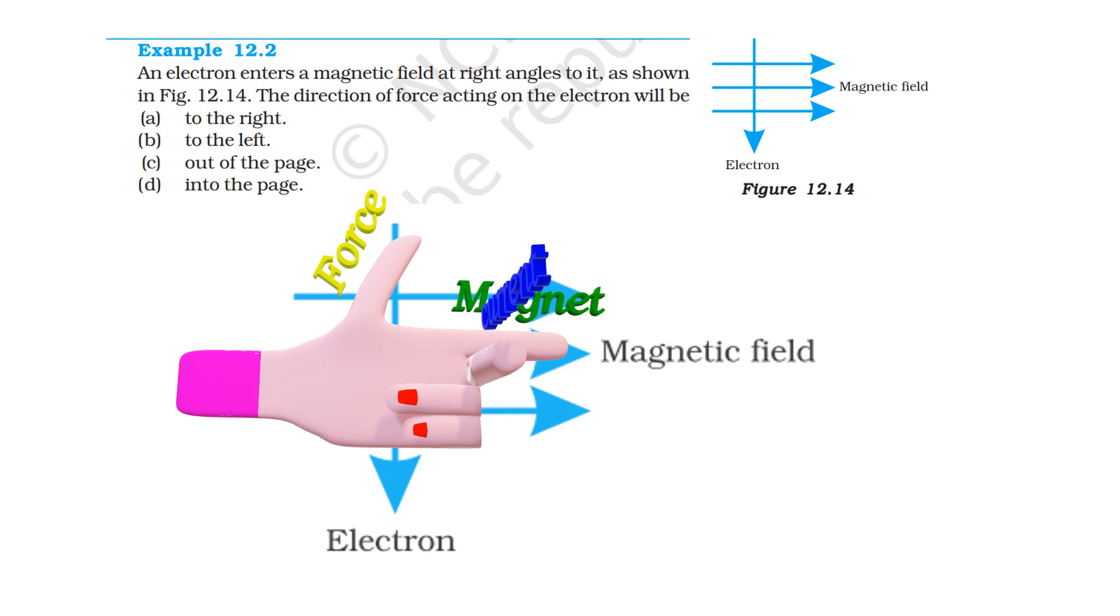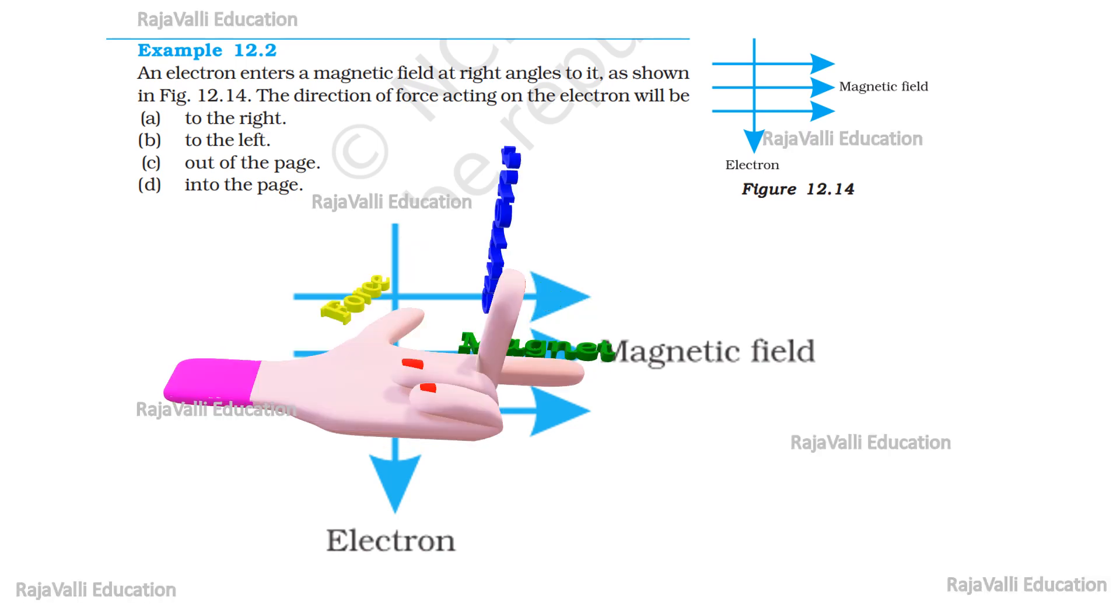then we can easily identify the direction of the force on the electron as shown in the diagram. Here you can see the direction of the thumb is the direction of the force acting on the electron.